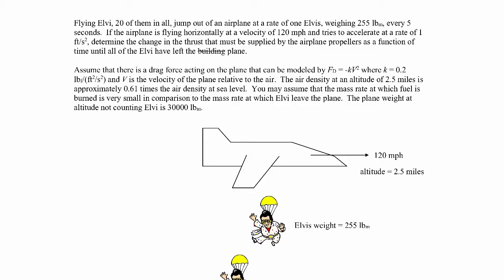The airplane is flying along horizontally at a speed of 120 miles per hour and tries to accelerate at a rate of one foot per second squared. These flying Elvi are starting to jump out just as the plane's trying to accelerate. We want to calculate the change in thrust that must be supplied by the airplane propellers as a function of time until all of the Elvi have left the plane.